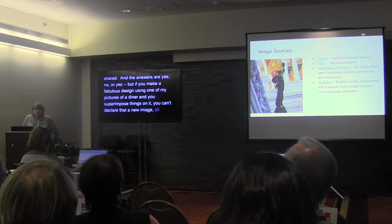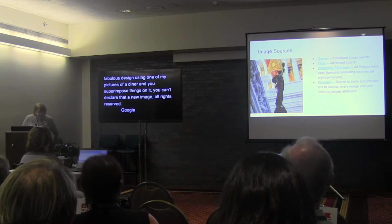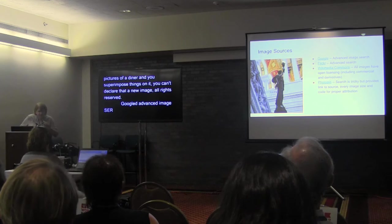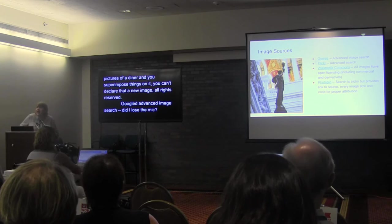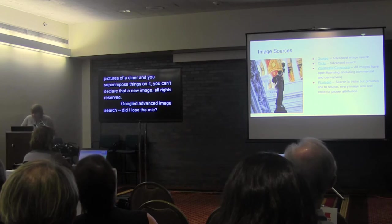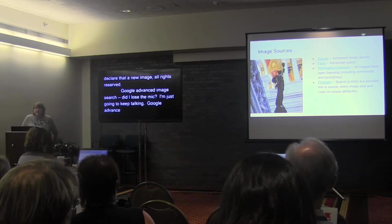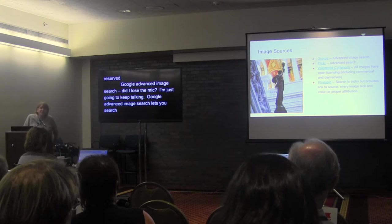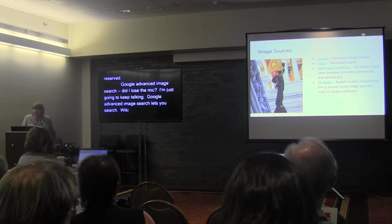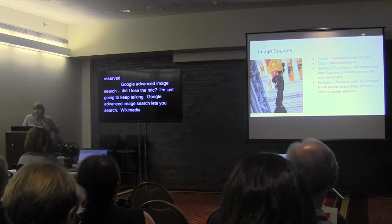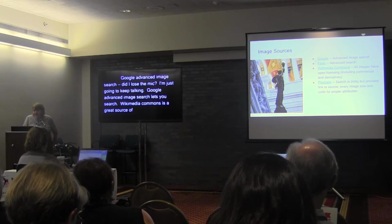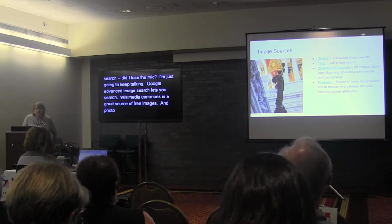For image sources: Google advanced image search lets you search by license. Flickr shows you the licenses. Wikimedia Commons — the image source for Wikipedia and many other images — is a great source of free images. And Photo Pin gives you even the embed code to use.